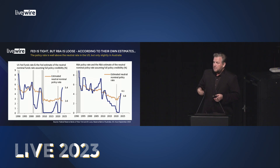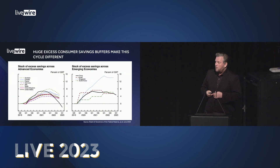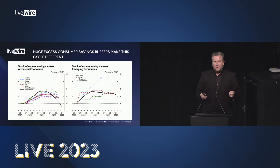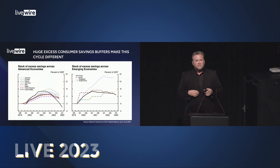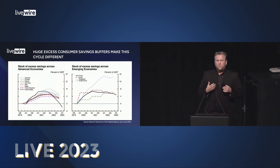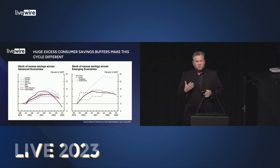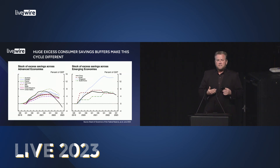In the US we are seeing some stresses materialize, but another key fly in the ointment is that when we shut down households and communities during the pandemic we stopped them spending, right at the same time we gave them record amounts of cash. This has led to something we've never seen before: these unprecedented consumer saving buffers. We estimate in Australia they're worth about 20% of annual income, and they are delaying the hiking cycle's impact on consumers and households.